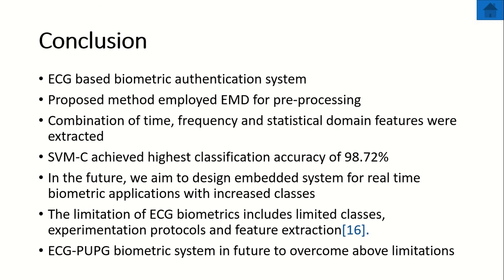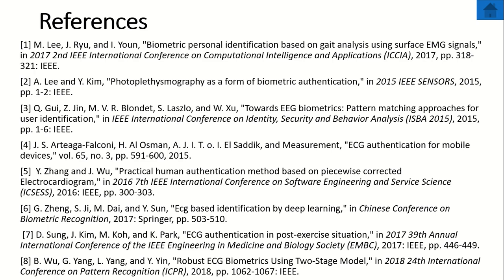In conclusion, we presented an ECG-based biometric authentication system. EMD was used for preprocessing. For feature extraction, a combination of time, frequency, and statistical features was used. SVM cubic was used as a classifier, yielding an accuracy of 98.72%. Future goals include designing an embedded system for real-time biometric applications with an increased number of classes. Limitations include limited classes, experimentation protocols, and feature extraction. To overcome these limitations, we intend to use an ECG and photoplethysmograph fusion system, which will enhance accuracy. Thank you.